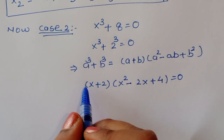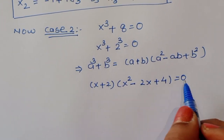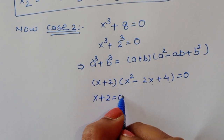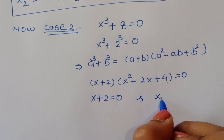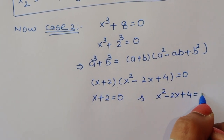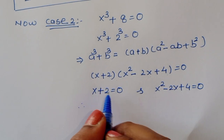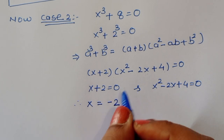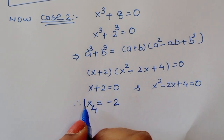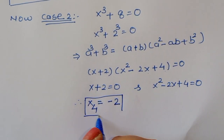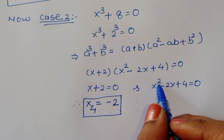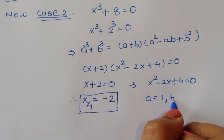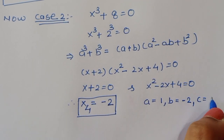We again get two equations: x plus 2 equals 0 and x squared minus 2x plus 4 equals 0. From the first, x equals minus 2. This is x₄ equals minus 2. For x squared minus 2x plus 4 equals 0, the coefficients are a equals 1, b equals minus 2, and c equals 4.